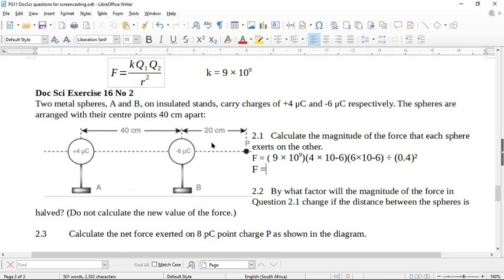I have 1.35 newtons of force. This force needs a magnitude, we have that, a unit, we have that, and a direction. These two are opposite charges. Opposite charges attract. So here's my answer: 1.35 newtons of attraction.